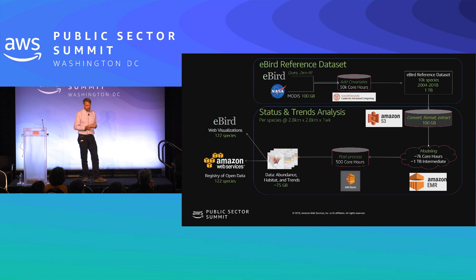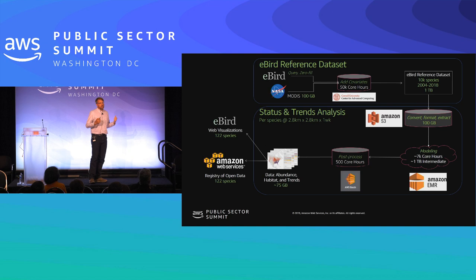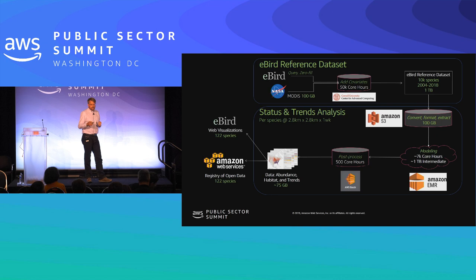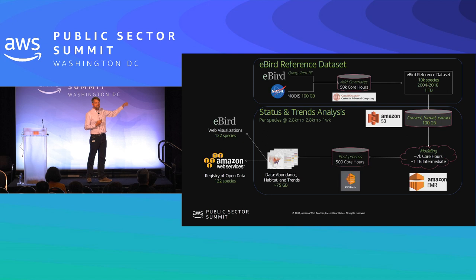Then we start specific modeling called status and trends — trying to deal with those three types of challenges. We extract data from the eBird reference data set using Amazon S3, model the data using Amazon EMR, and then there's a post-process using AWS Batch. We take the resulting data products and optimize them so there's a series of visualizations and data products that total about 75 gigabytes. The overall process looks at what the abundance is within every 2.8 by 2.8 kilometer grid cell and the expected abundance of birds for every single week of the year across different years.